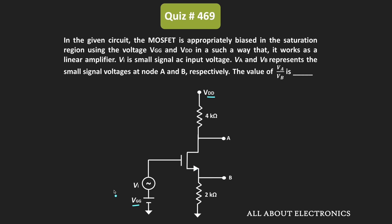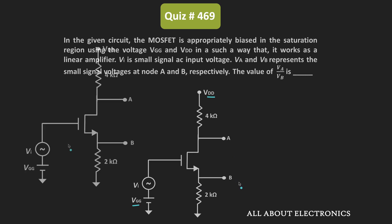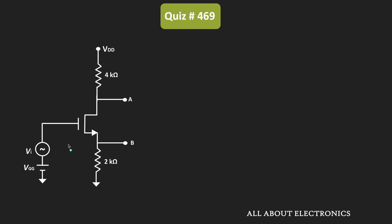Here, Vi is the small signal input voltage, while Va and Vb are the small signal voltages at node A and node B. We have been asked to find the ratio of voltages Va and Vb. To find these small signal voltages we need to do the small signal analysis and represent this MOSFET by the small signal model.